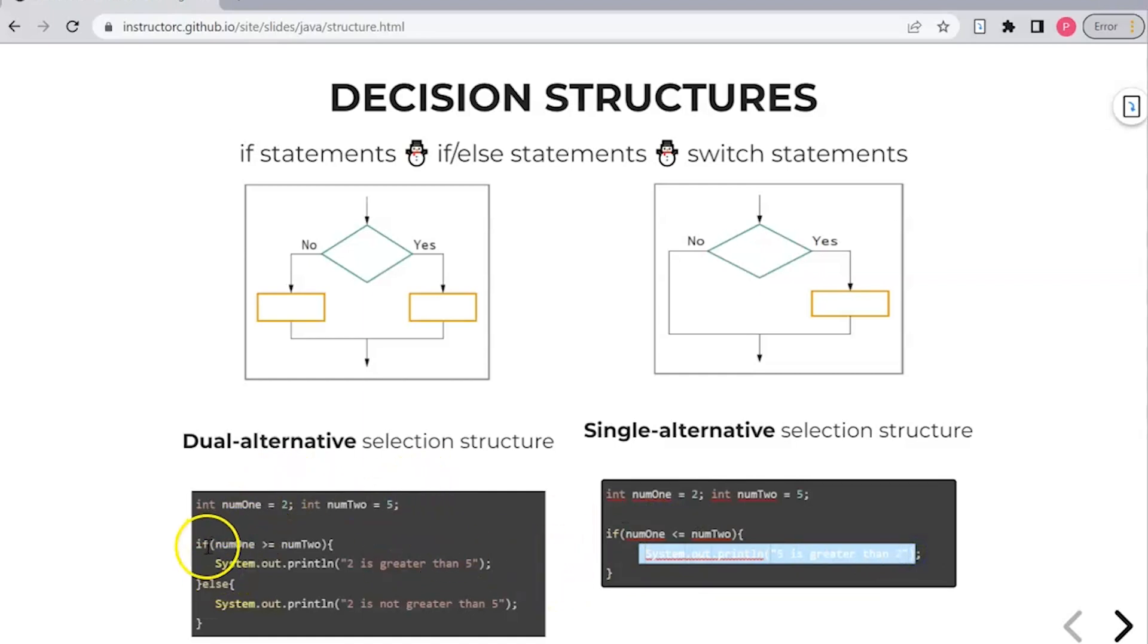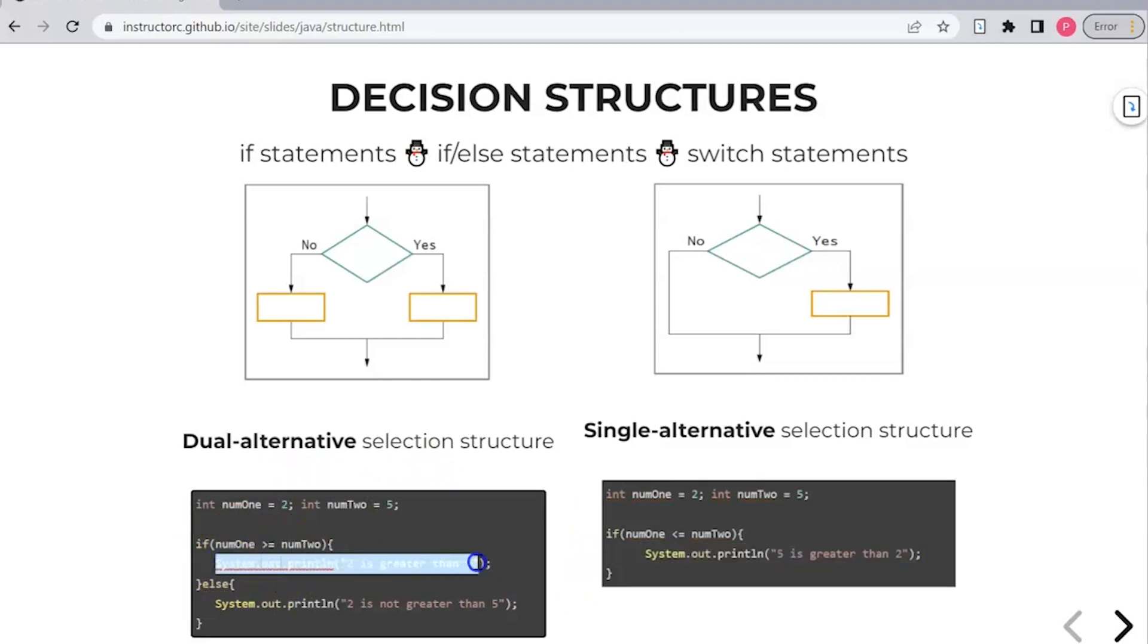Whereas the dual alternative, if this condition is true, num one is greater than or equal to num two, say two is greater than five. But if this condition is false, then it would output two is not greater than five.